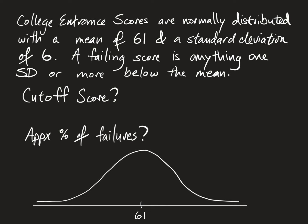The mean is 61, which is right in the middle, and the standard deviation is 6. And in a normal curve, you jump by the amount of the standard deviation. So if I go left one standard deviation, I subtract 6 and get 55 here.